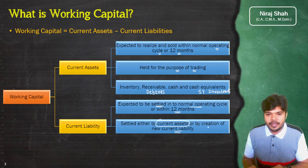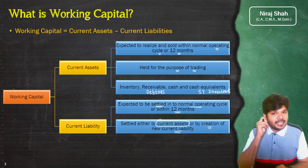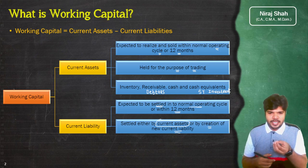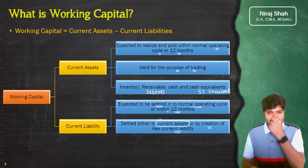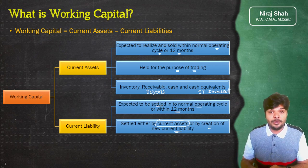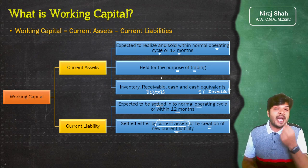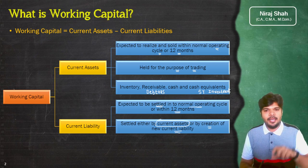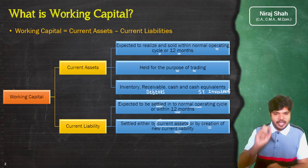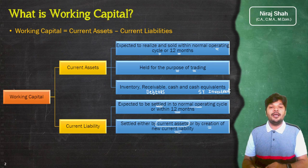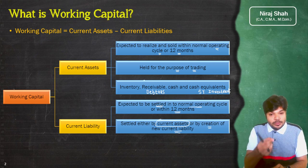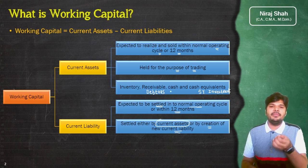Current liability को by creation of new current liability भी settle किया जा सकता है। Current liability ज्यादातर long term fund से नहीं चुकाई जाती — या तो current asset का use करके चुकाई जाती है, जैसे debtor से पैसा मिला और creditor को चुका दिया। या फिर एक current liability को settle करने के लिए दूसरी current liability पैदा करनी पड़ती है — जैसे creditor को pay करने के लिए bank overdraft ले लिया।